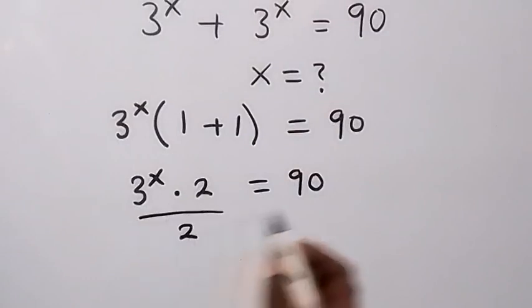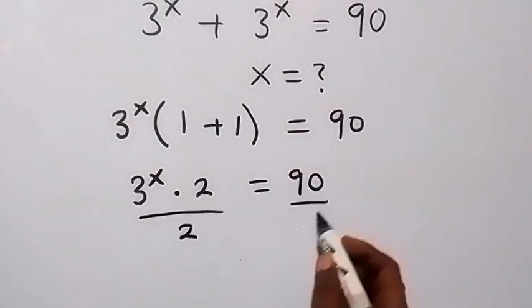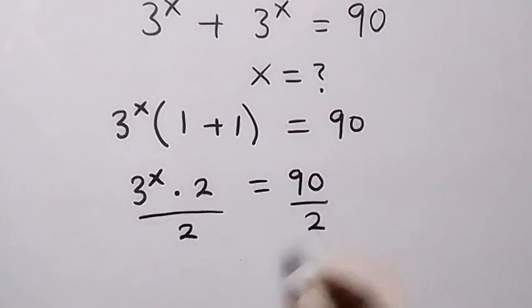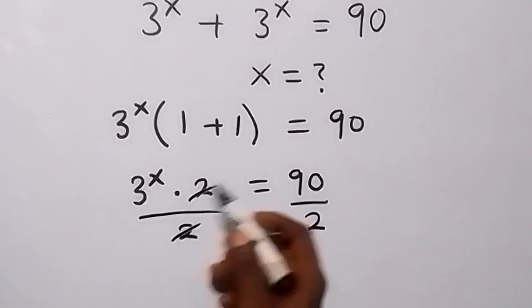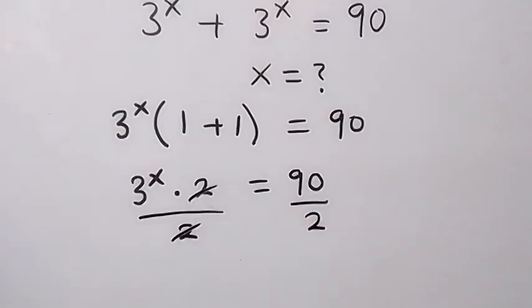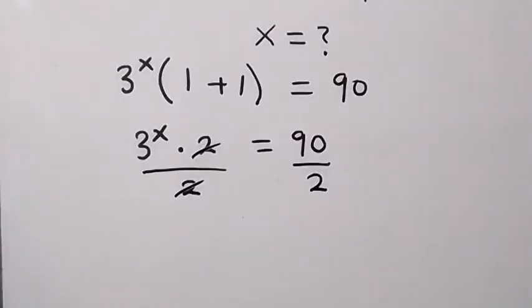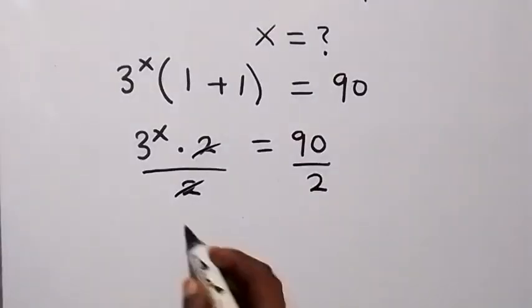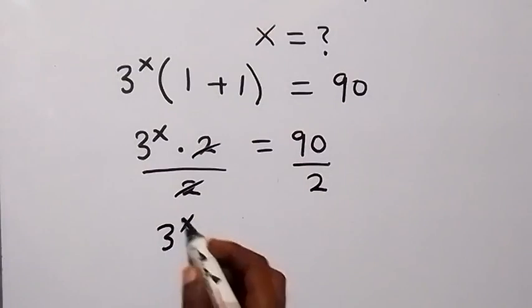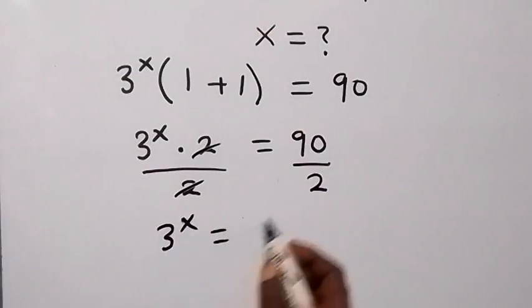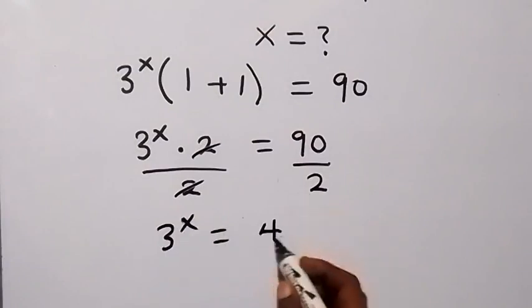Dividing both sides by 2 — the 2s cancel out — and we have 3 raised to the power x equals 90 over 2, which is 45.